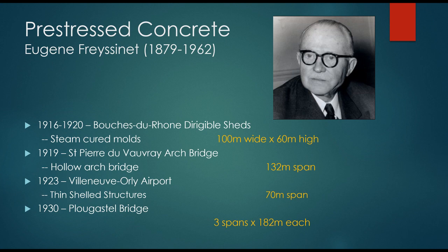As materials evolved into the early 1900s, Eugene Freycinet took it to a whole other level. He is considered by many people to be the father of modern concrete, especially in the area of prestressing. Prestressing was a way of incorporating high-strength materials to make sections more efficient, more elegant, and more compactly designed while still being able to hold the load. This is where engineering really started to take off.